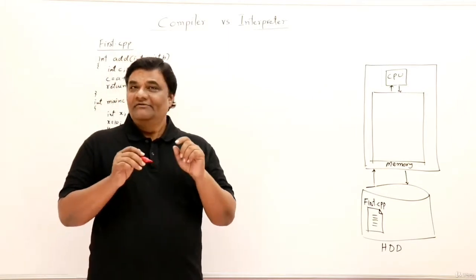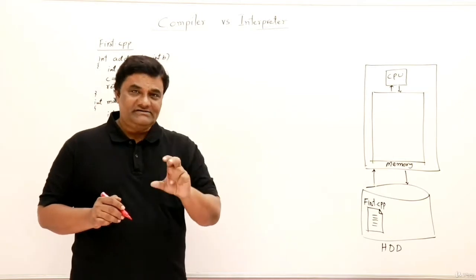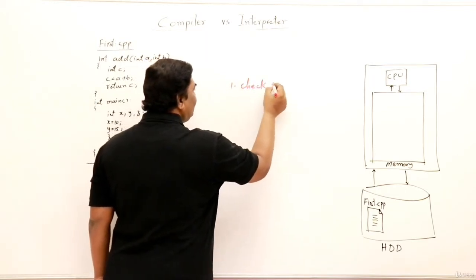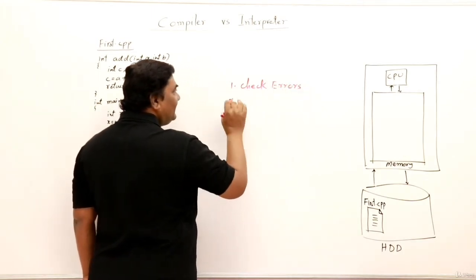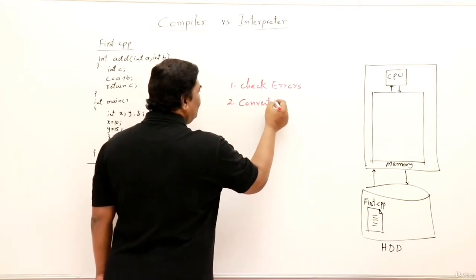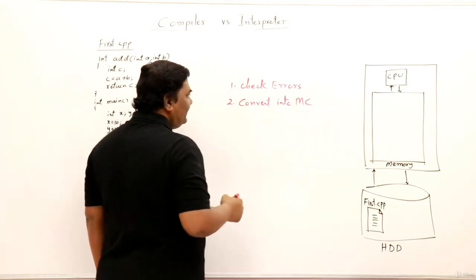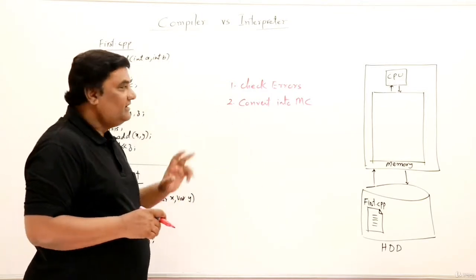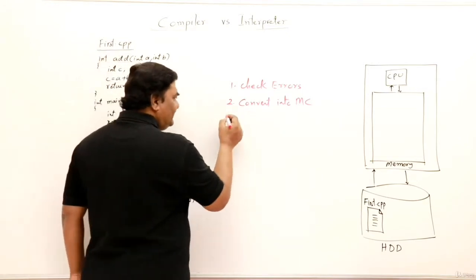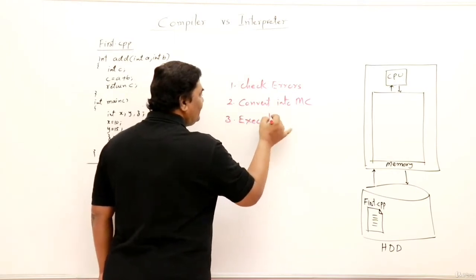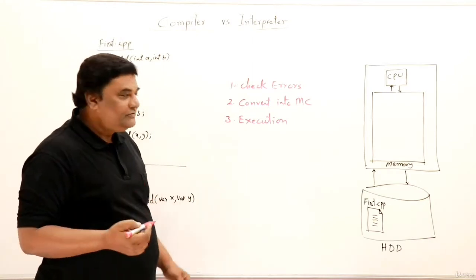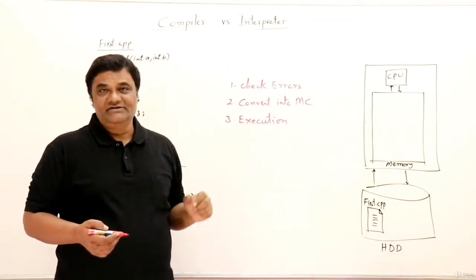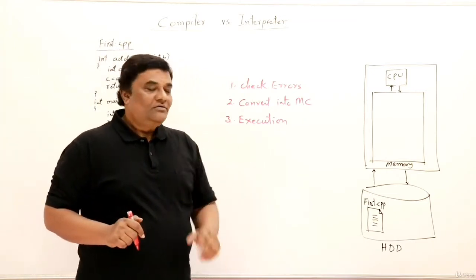To understand this, we should know the major tasks of a compiler or interpreter. The first task is to check for errors. The second task is to convert into machine code — high-level language gets converted into low-level machine code, which is understandable by the machine. The third thing is execution — running the program. Machine instructions are brought into main memory and executed by the CPU.